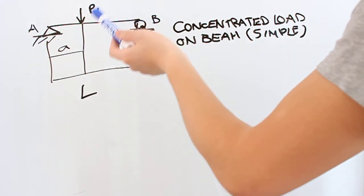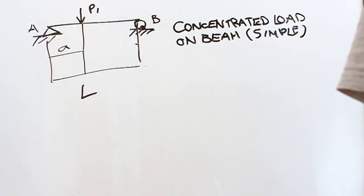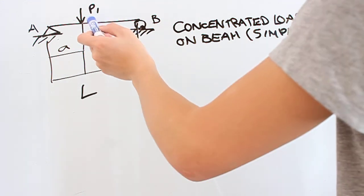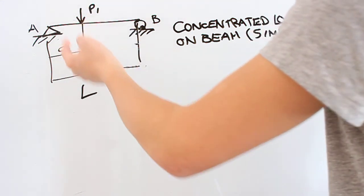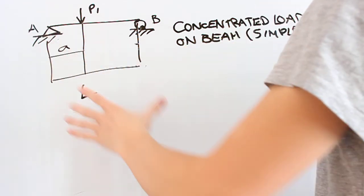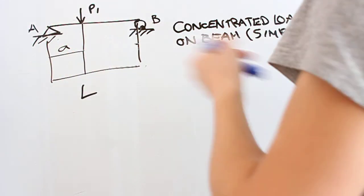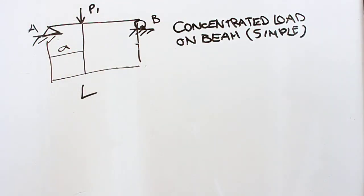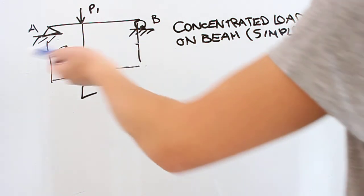And a roller, which can translate horizontally but not vertically. We've placed a force P1 at point A, at an arbitrary distance a from the left support. This whole beam has a length of L. What we're going to do is find out the reactionary forces at the supports.